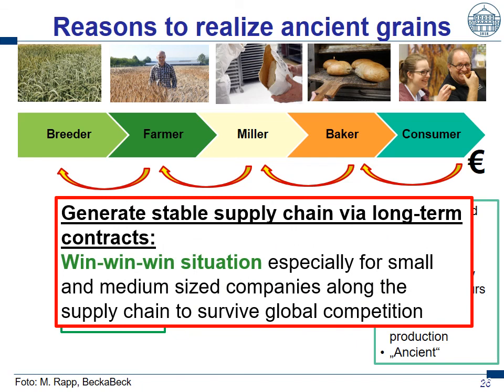Thus, the aim would be to generate a stable supply chain via long-term contracts across the chain. This will generate a win-win-win situation, especially for small and medium-sized companies along this supply chain to survive global competition. And therefore I believe spelt, emmer, and einkorn are an attractive niche crop which doesn't require funding or whatever — it just survives by interest coming from the consumer.